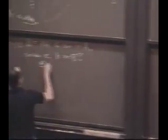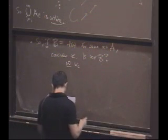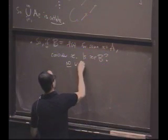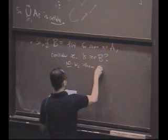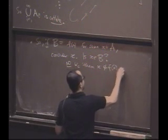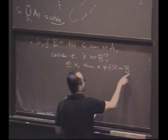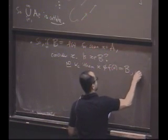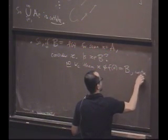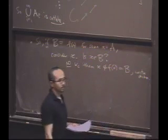So is x in B? No, because if it were, because then x would not be in f of x. But f of little x is B. So x in B implies x is not in B. Contradiction.